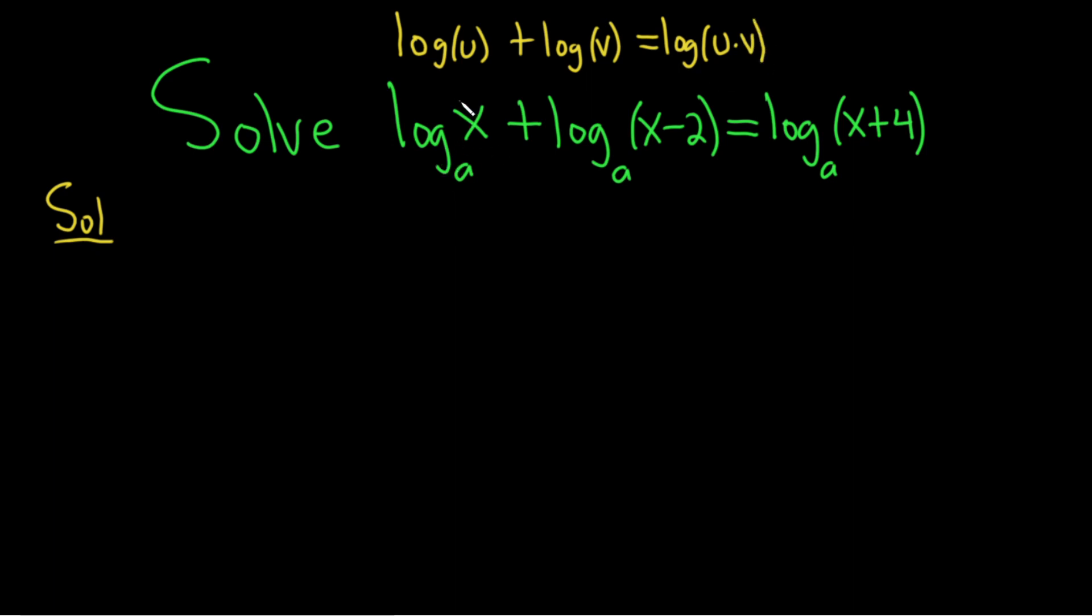Here this is our u and this is our v. We basically just have the log base a of u times v, so it's x times x minus two. And on the right hand side we simply have the log base a of x plus four.